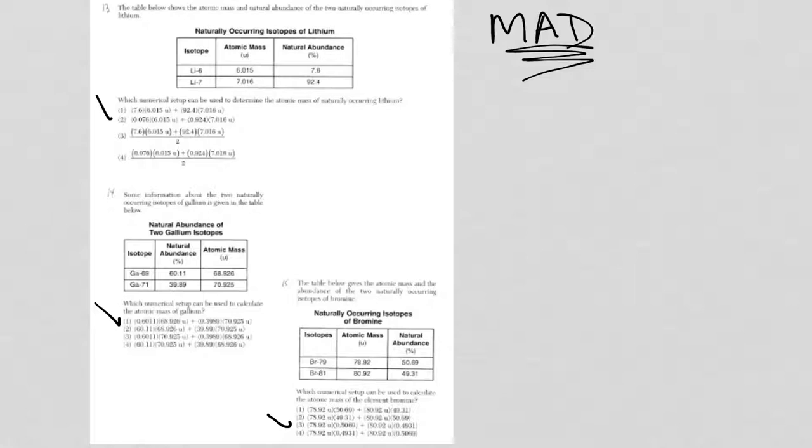So let's take a look at question 13 and see if you can't figure it out for 14 and 15. It's the same setup, same process every time. So what are you multiplying? Well, in this first problem, I have two isotopes of lithium.